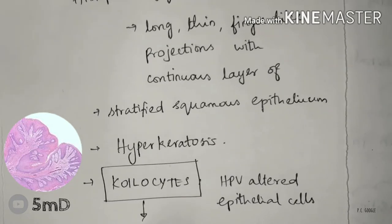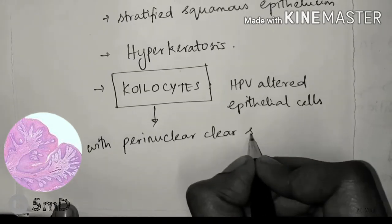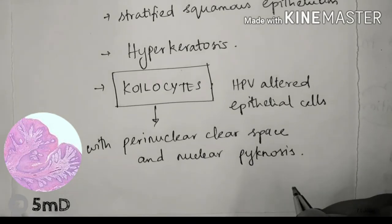Sometimes koilocytes may be found. Koilocytes are epithelial cells which are modified by HPV with perinuclear clear spaces and nuclear pyknosis.